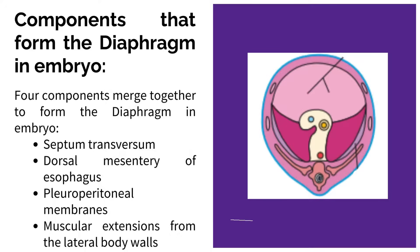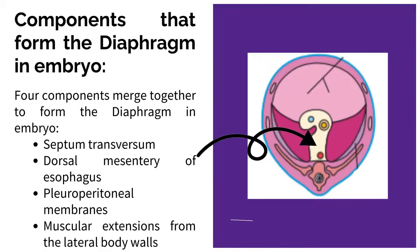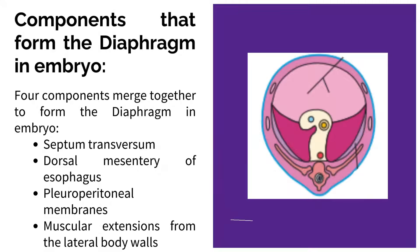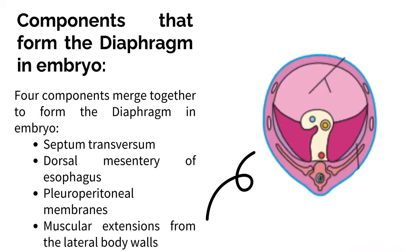Four components merge together to form the diaphragm in the embryo: septum transversum, dorsal mesenteria esophagus, pleuroperitoneal membranes, and muscular extensions from the lateral body walls.